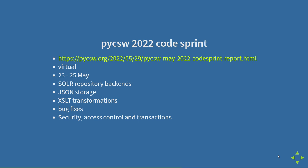We also started working on JSON storage during the sprint — meaning not only ingesting XML and shredding it into a database, but ingesting JSON and shredding that into a database. The reason we're doing that is because new JSON-based metadata formats such as the OGC API Records core model as well as STAC are moving to a JSON representation. We also implemented XSLT transformation, so organizations with custom XSLTs defining how they want metadata transformed can now use that approach.